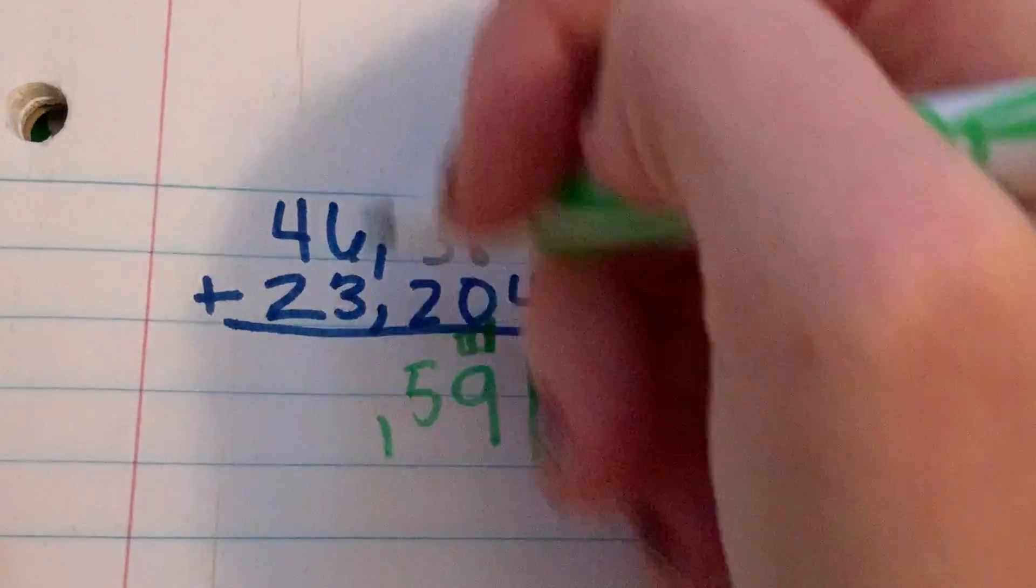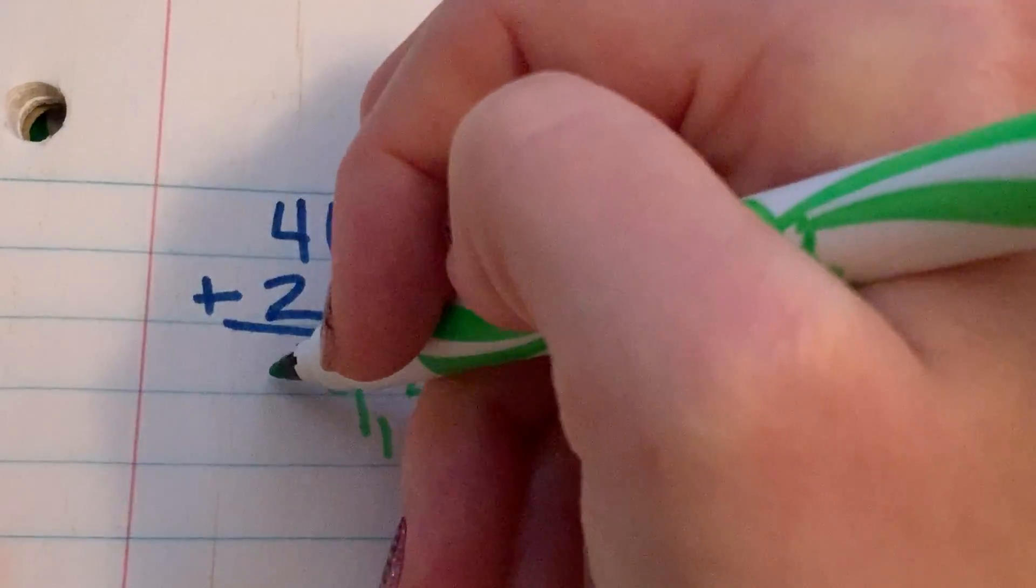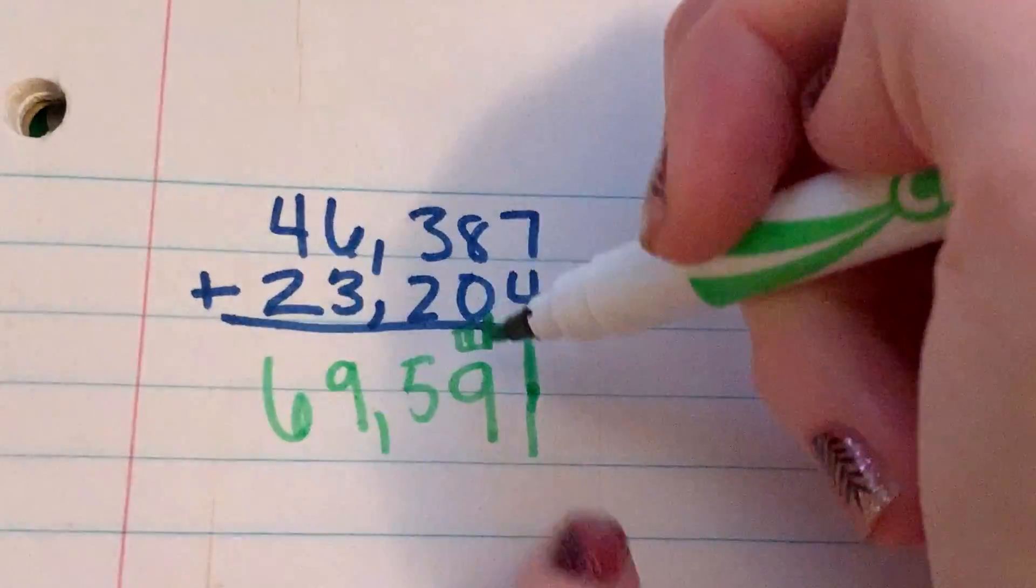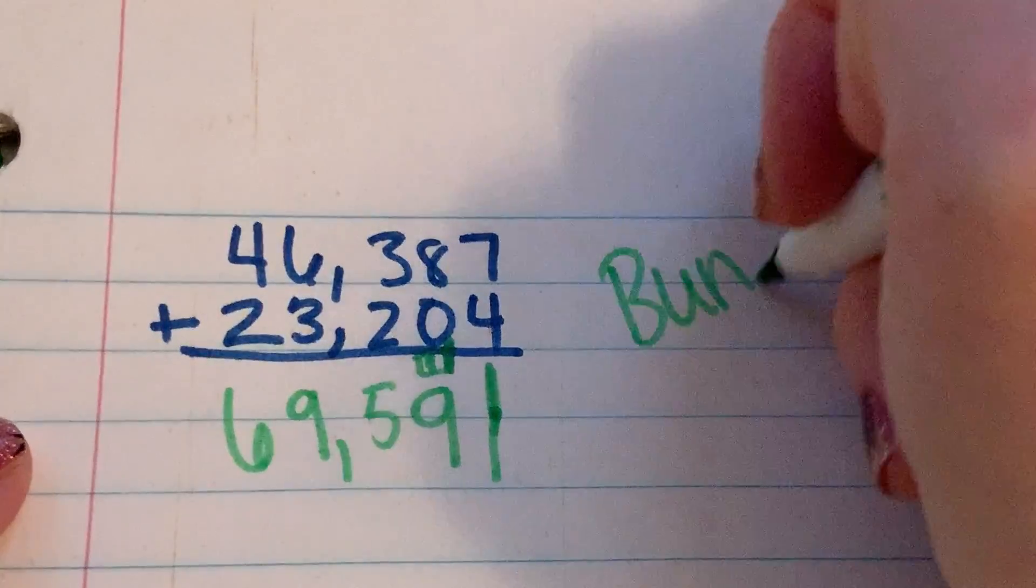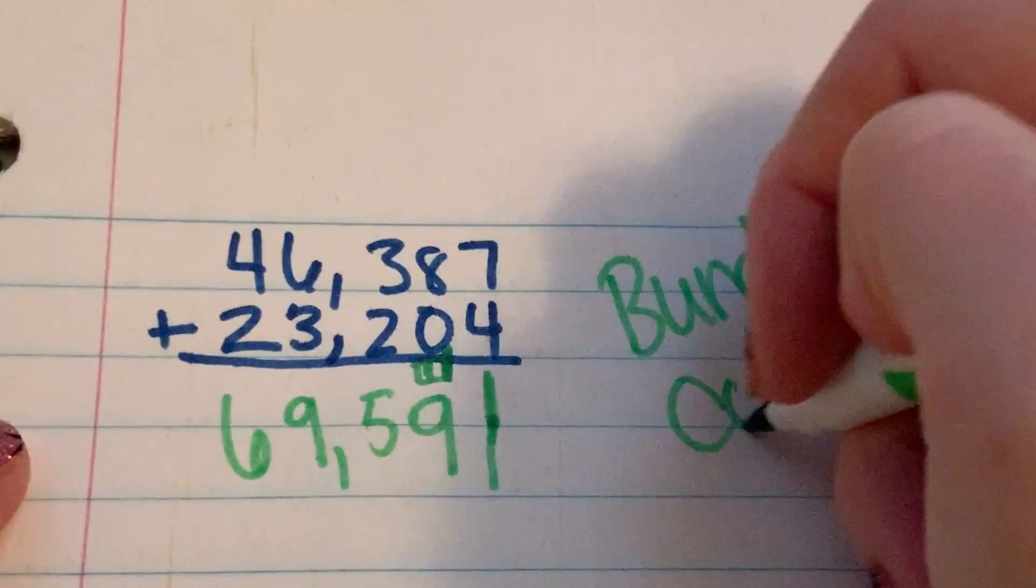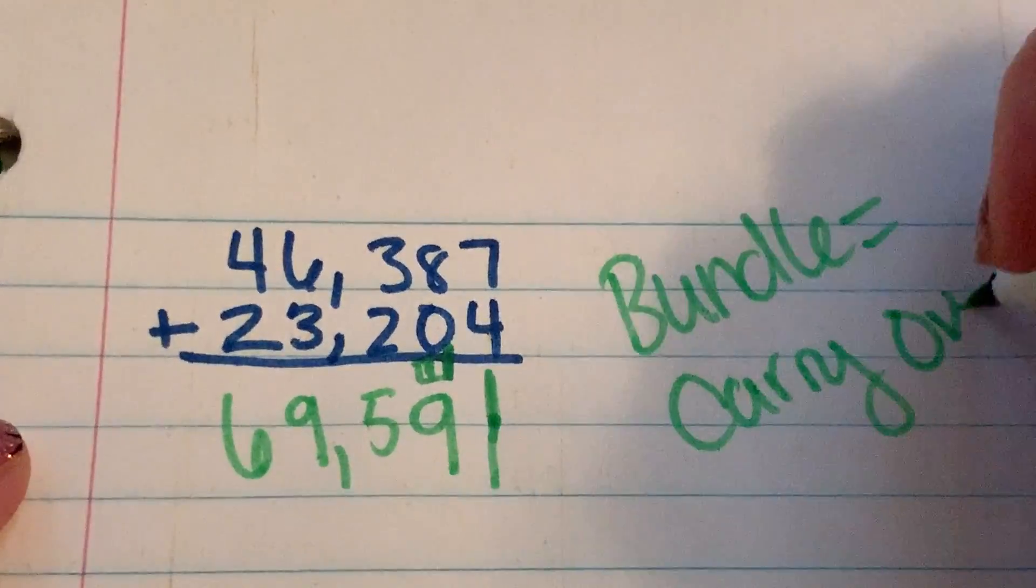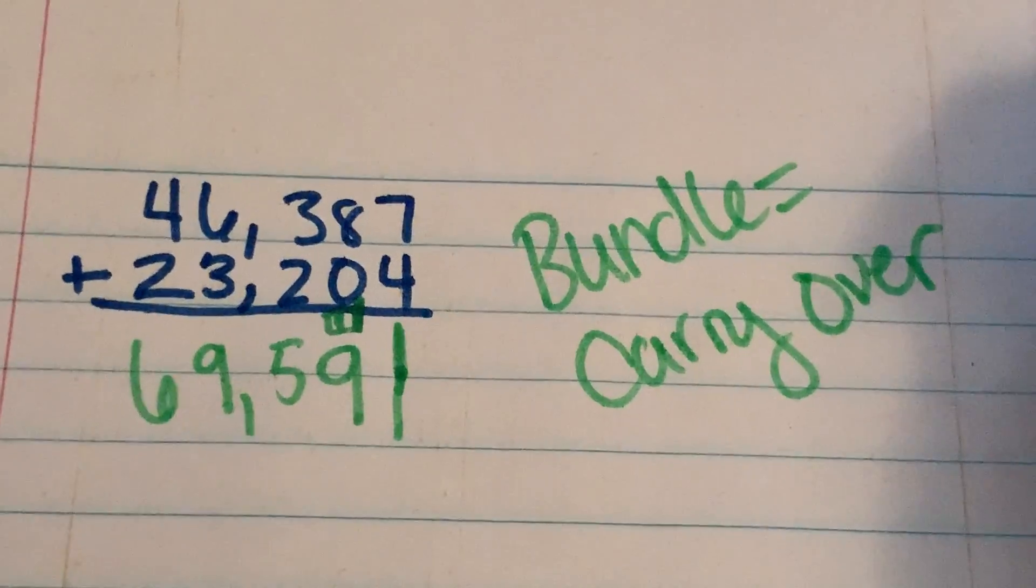So then I'd have 5, 6 plus 3 is 9, 4 plus 2 is 6. So I moved my bundle over. So this is a bundle. Bundle equals carryover. That's what you need to know for that.